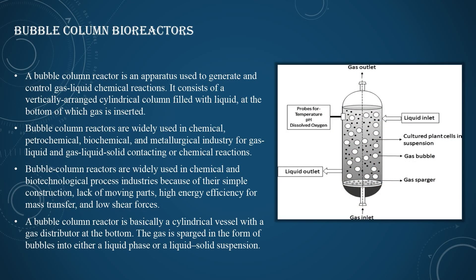A bubble column bioreactor is a vessel used to generate and control gas-liquid chemical reactions. It consists of a vertical cylindrical column filled with liquid, with gas inserted at the bottom. Bubble column bioreactors are widely used in chemical and biotechnological industrial processes because of their simple construction, lack of moving parts, high energy efficiency for mass transfer, and low shear force.